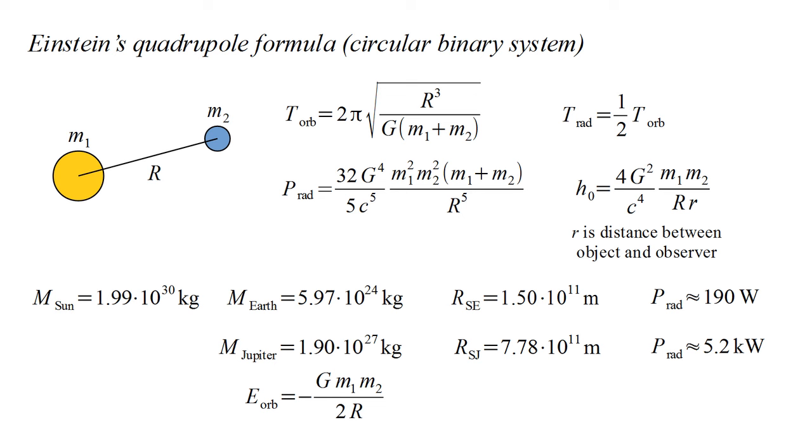The orbital energy is minus g times the product of masses over two times their separation. For this energy to decrease, the separation must decrease. As energy is radiated away in gravitational waves, orbital energy decreases, separation decreases, orbital period decreases, and radiated power increases.